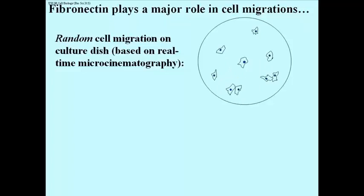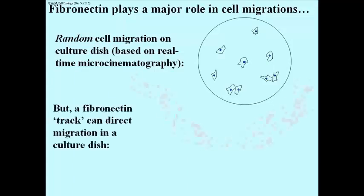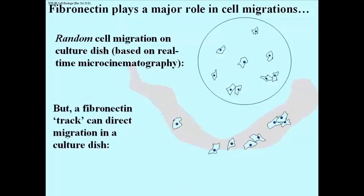On the other hand, if you take a solution of fibronectin and dip a paintbrush into it and paint a track along the surface in this Petri dish, the track can actually direct the cells to migrate along the track, which is what I've just shown here.